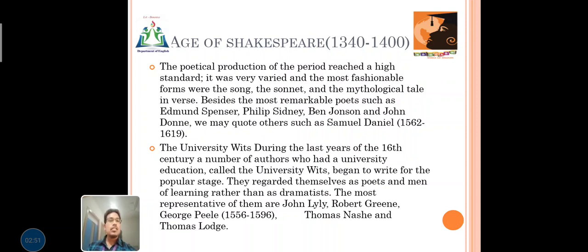We may quote some others such as Samuel Daniel in 1560-1619. The University Wits — I hope you know about the University Wits and writers. The University Wits were active during the last six years of the 16th century. The number of authors who had university education were called the University Wits. They began to write for the popular stages and considered themselves poets and men of learning rather than dramatists. Some other important writers are George Peele, Thomas Lodge, Thomas Nashe, Robert Greene, and John Lyly.